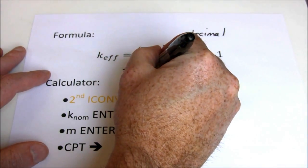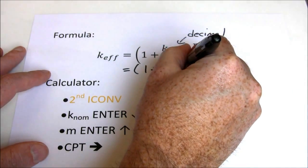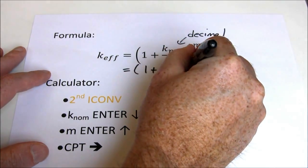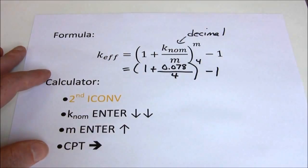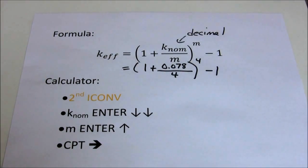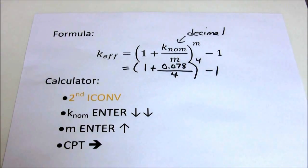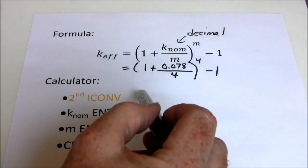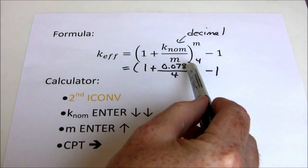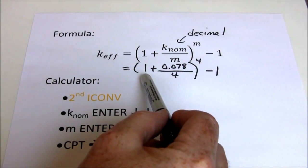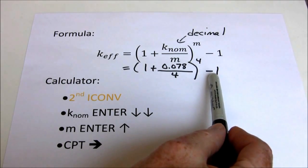So when we set that up: 1 + 0.078 divided by 4, raised to the 4th power, subtract off 1. Now I mentioned one common mistake that people make is they'll use the percent instead of a decimal. Another thing to be careful about is order of operations. Remember, order of operations - do what's within parentheses first, and division comes before addition. So 0.078 divided by 4 plus 1, raised to the 4th power, subtract off 1.